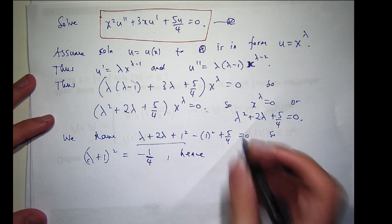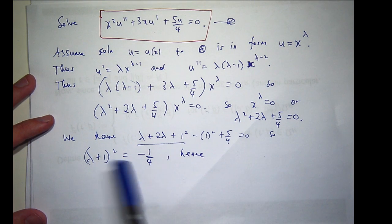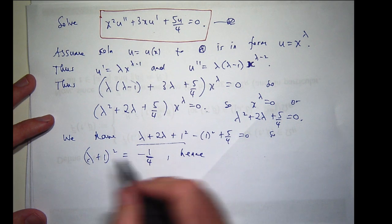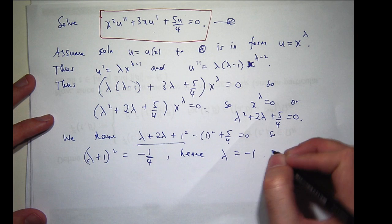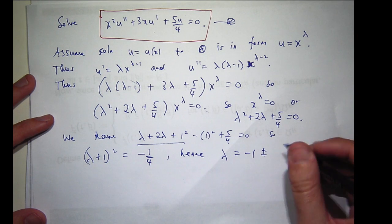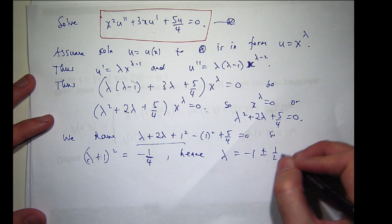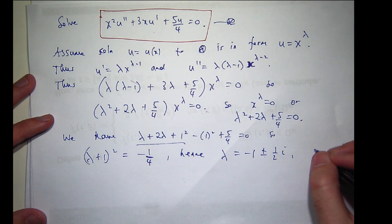If I take the square roots of both sides, I'll get λ equals -1 plus or minus (1/2)i. Remember, i² is just negative 1.